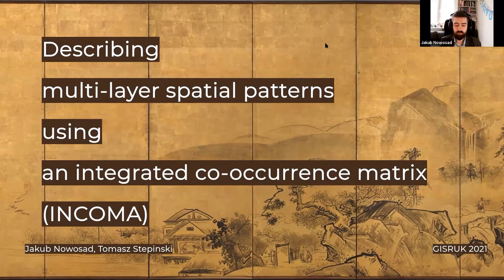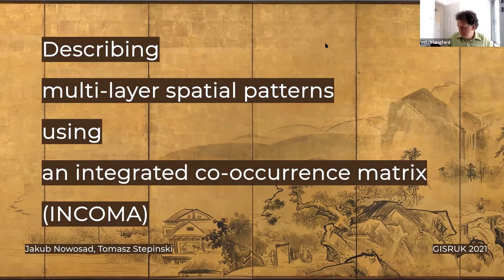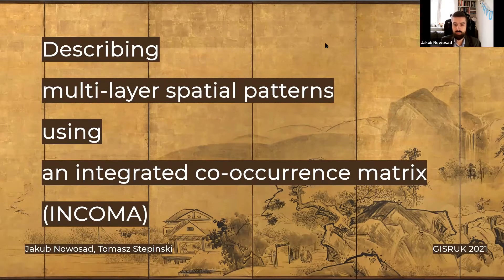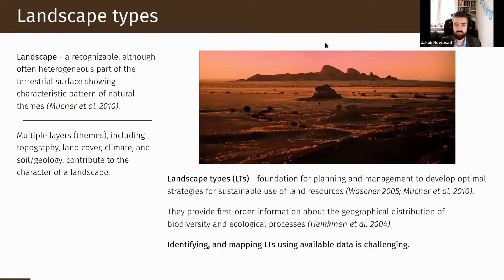My name is Jakub Nowosad and together with Tom Stempinski we want to present our work about how to describe in a quantitative way multi-layer spatial patterns. Our work is aimed at enabling new things and expanding existing analyses, mostly in terms of working with so-called landscapes. Landscapes are heterogeneous parts of the earth's surface with characteristic patterns of some themes, and those themes include land cover, climate, soils, or topography.